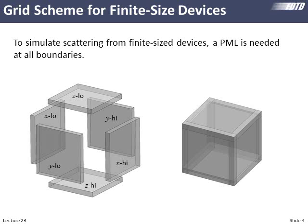If we're modeling something that is not of infinite extent or not infinitely periodic, we need to put PMLs around all of the boundaries. Inside this shell would be our total field scatter field interface, and inside that would be some kind of device that's about a wavelength away from the boundaries. That's how we handle our finite-sized devices.